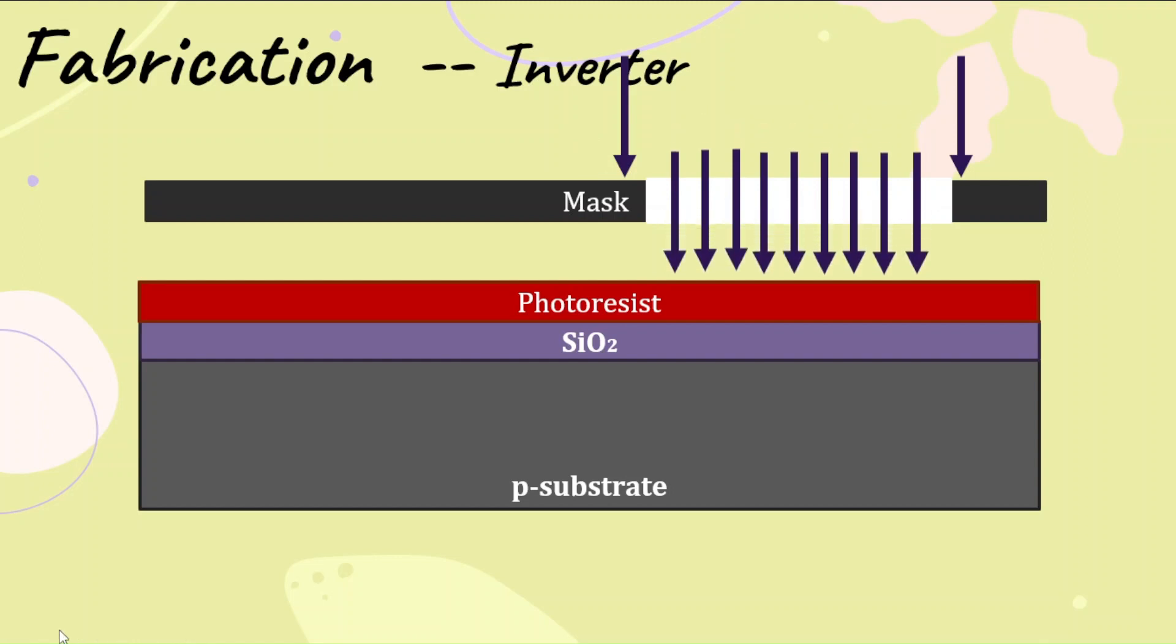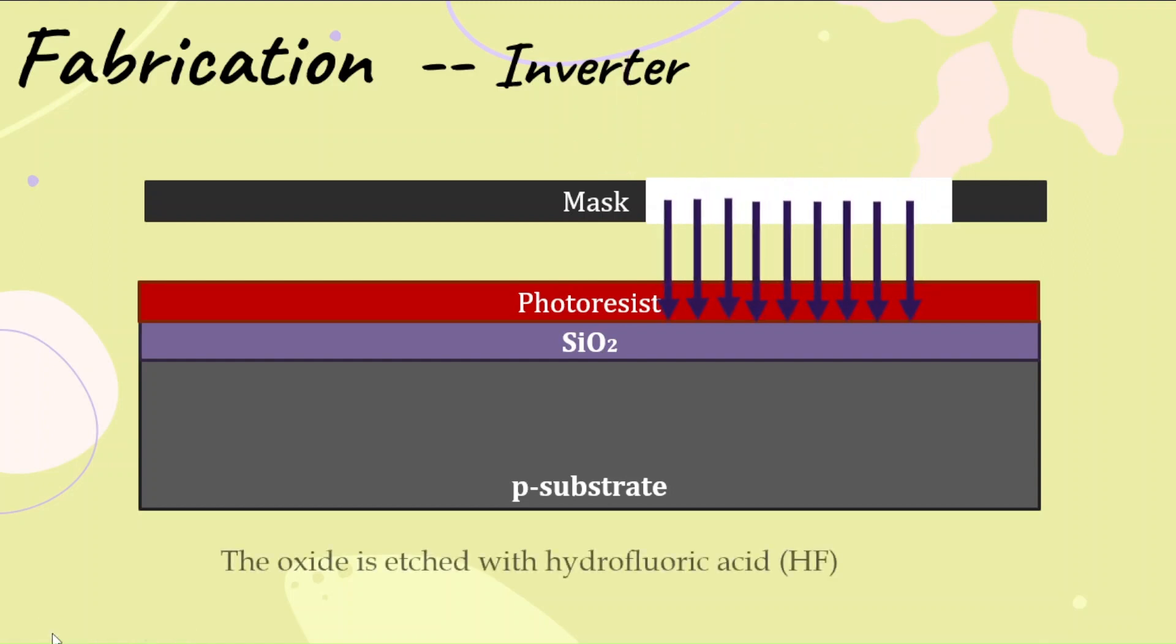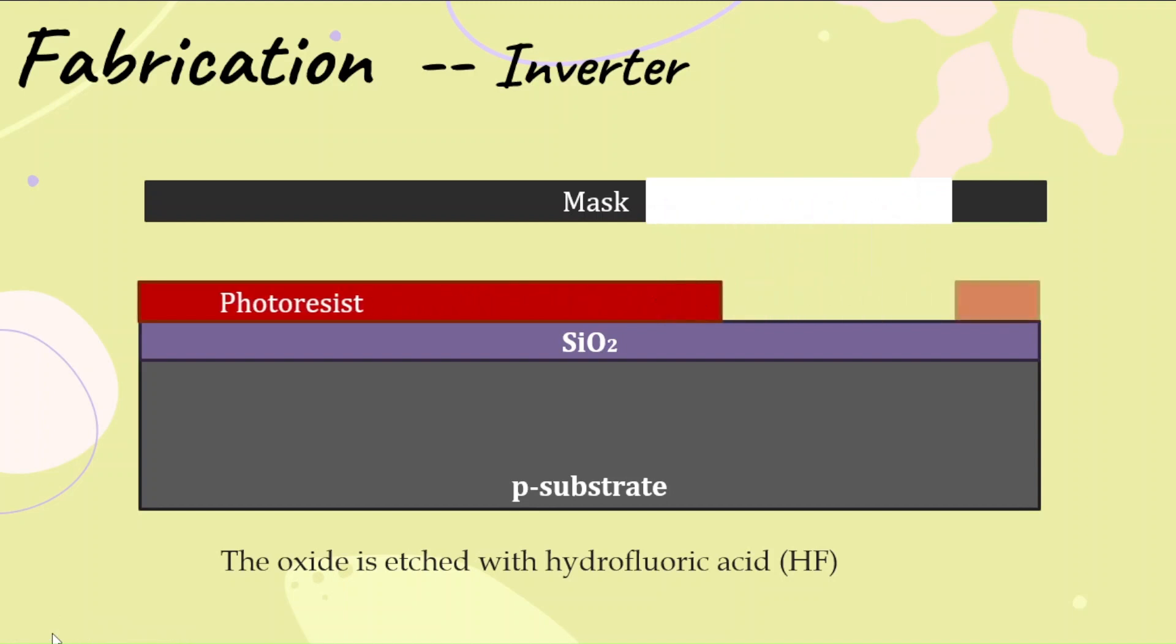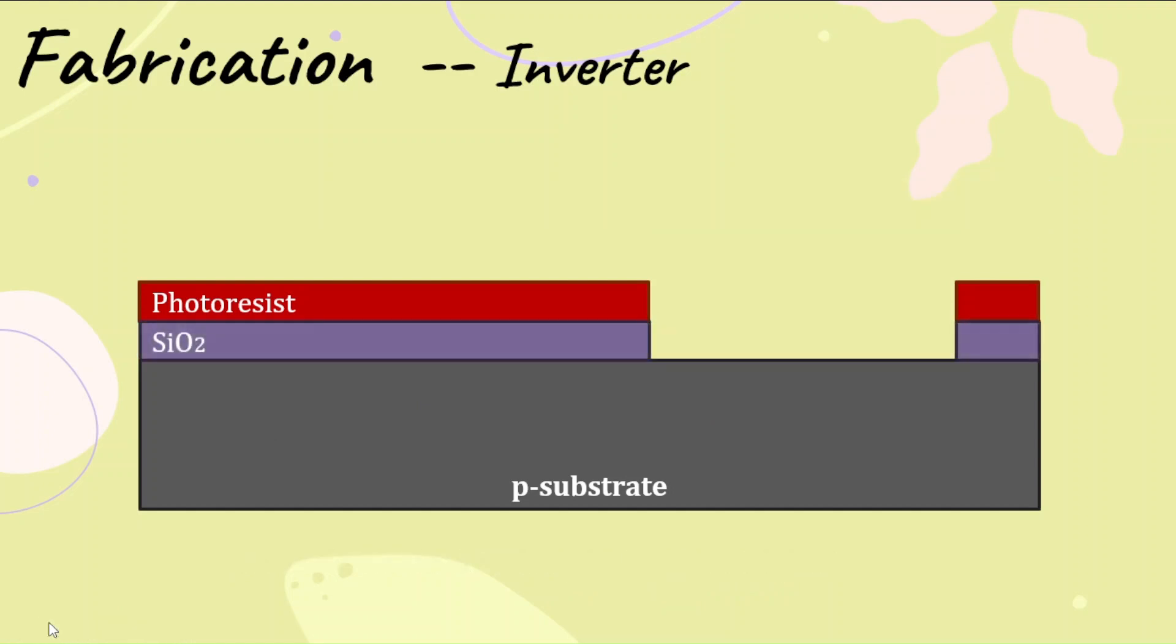This light penetrates into the photoresistive layer and melts that layer, creating a hole. Using hydrofluoric acid, the silicon dioxide in this gap or window is removed or etched off.